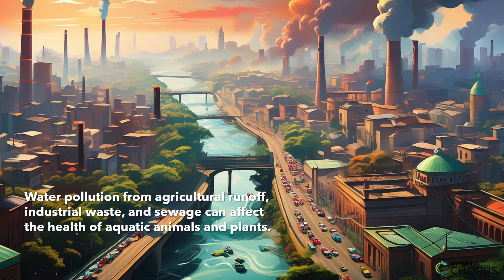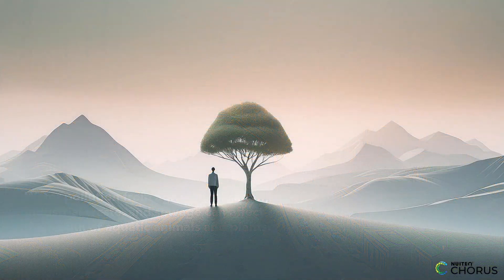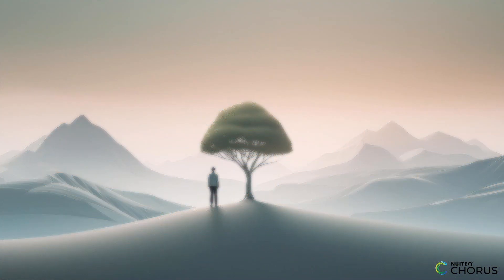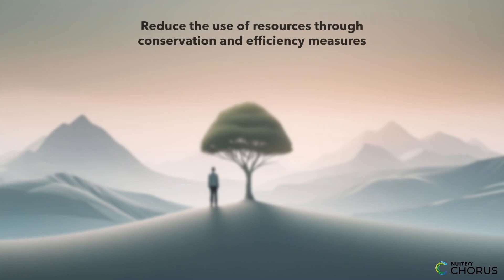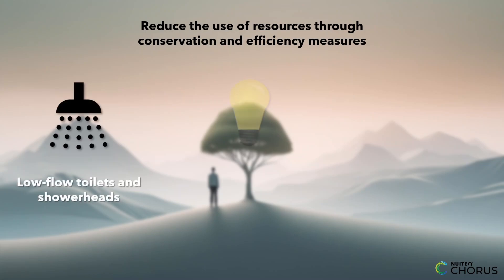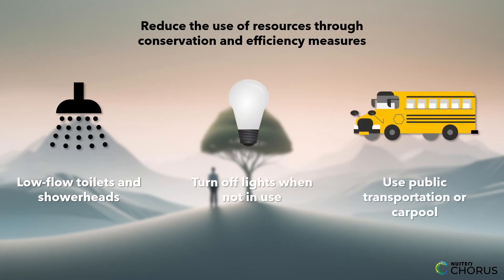Efforts can be made to minimize the impact of humans on the environment. One way is to reduce the use of resources such as water and energy through conservation and efficiency measures. This can include using low-flow toilets and showerheads, turning off lights when not in use, and using public transportation or carpooling.